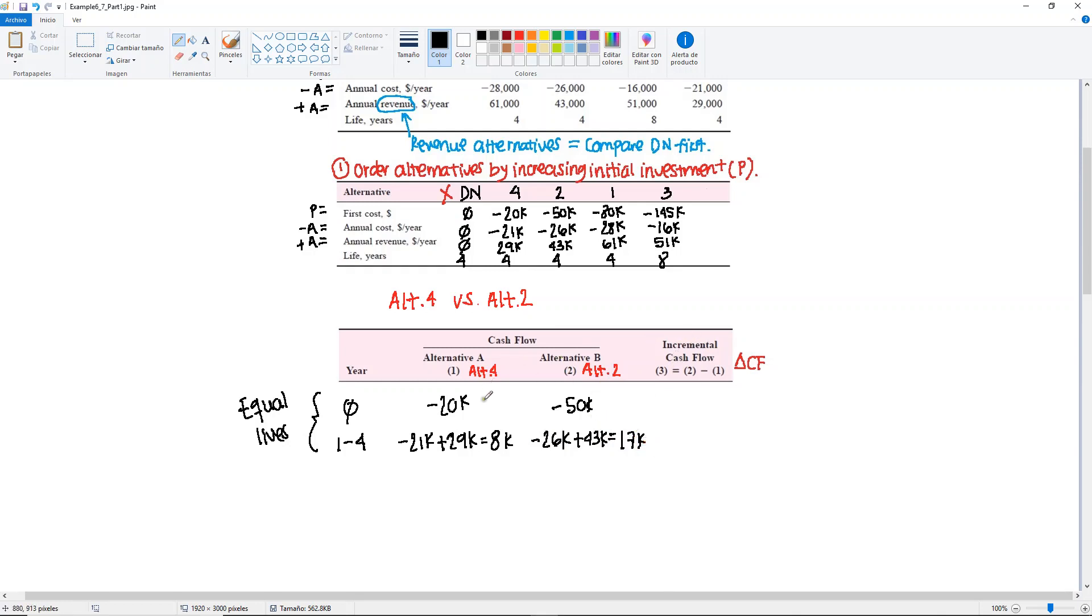Then we get the difference between the two. Remember, we keep this negative so we may have double negatives at some point. The first one is minus $50,000 minus minus $20,000, giving us minus $30,000. Then the next one is $17,000 minus $8,000, giving us positive $9,000. These two are the values we will be using in the next step.